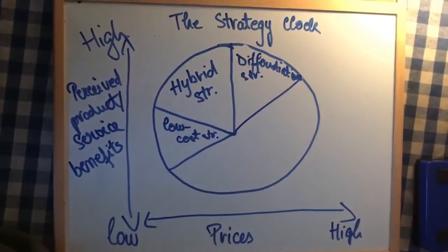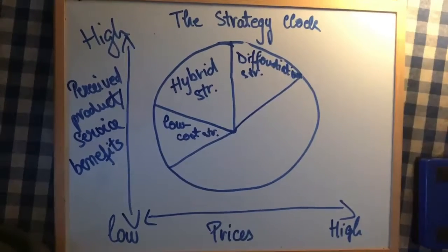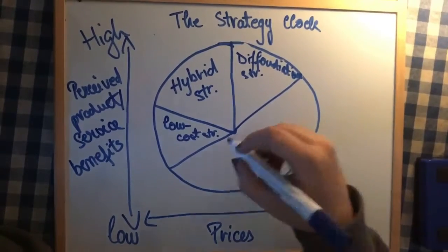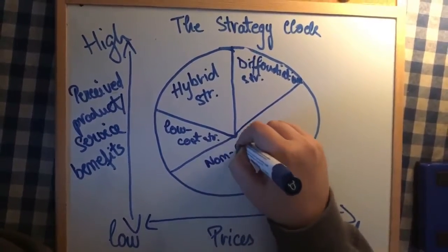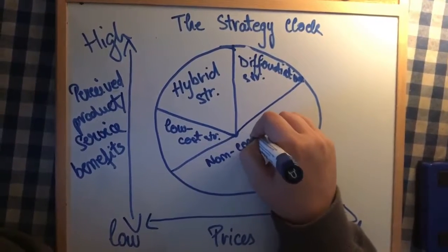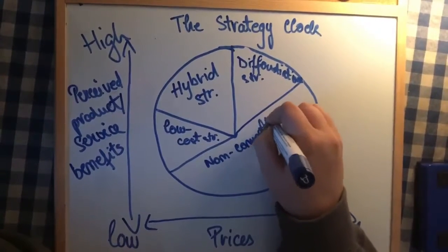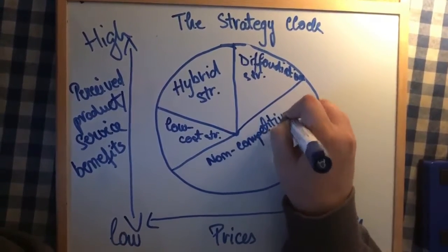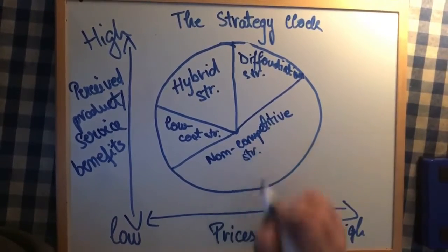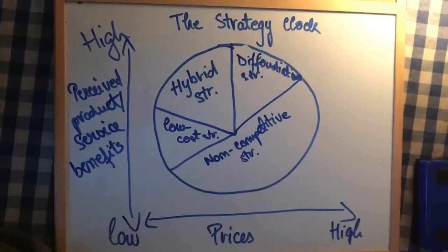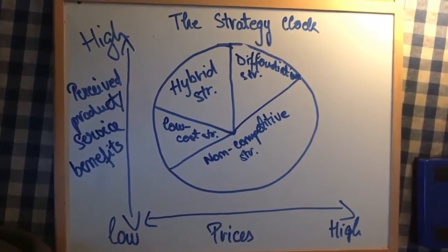The last zone is the non-competitive strategy, which is likely to fail because it has low benefits and high prices that customers are not willing to pay. This one leads to failure.